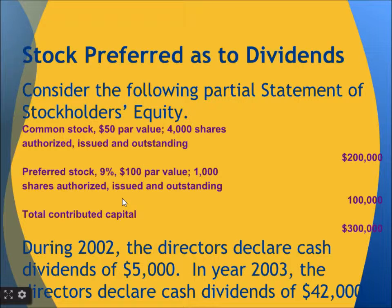The preferred stock carries a 9% rate. During 2002, the directors declared a cash dividend of $5,000. In year 2003, the directors declared a cash dividend of $42,000.